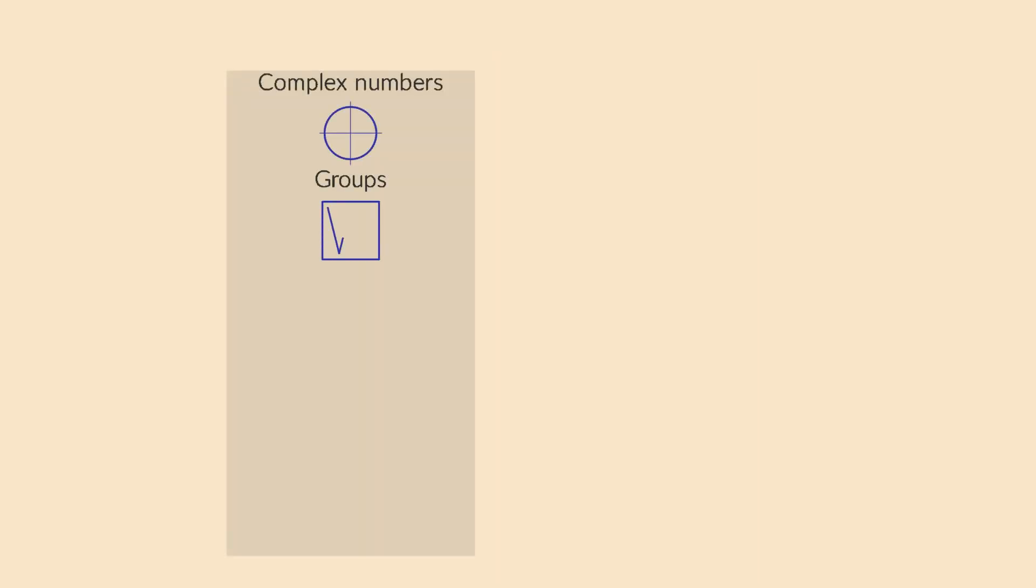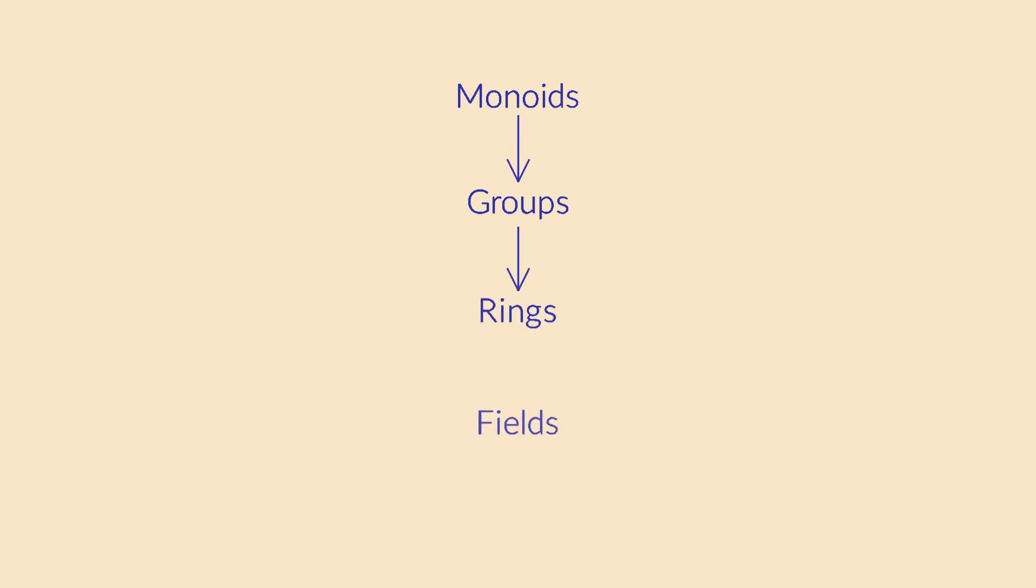After that, it makes sense to move from specific number systems to more abstract algebraic systems, such as monoids, groups, and perhaps also rings and fields.